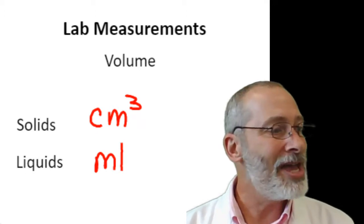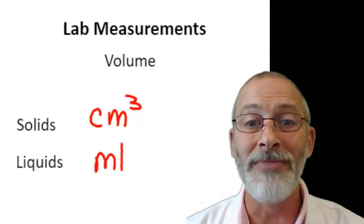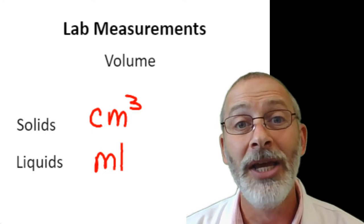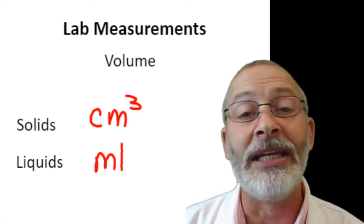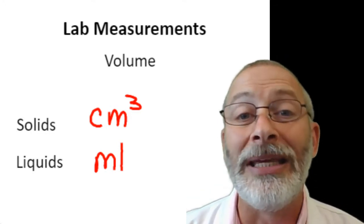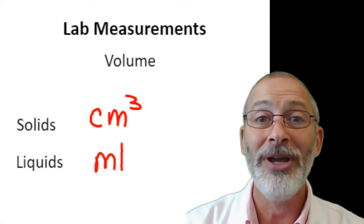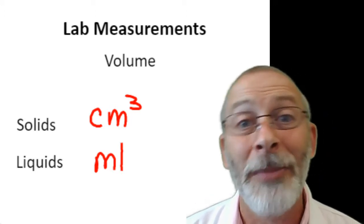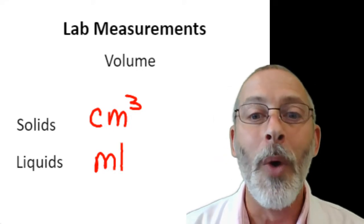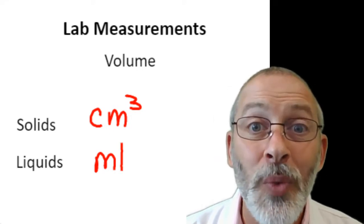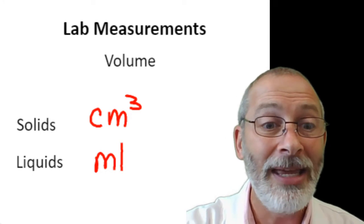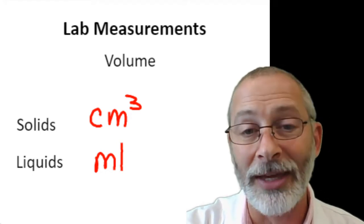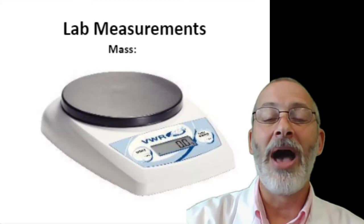So when you're measuring solids, we measure it in cubic centimeters. When we measure liquids, we measure it in milliliters. But remember that when talking about water in particular — which is the standard in the metric system — one cubic centimeter equals one milliliter. Now, how about mass?